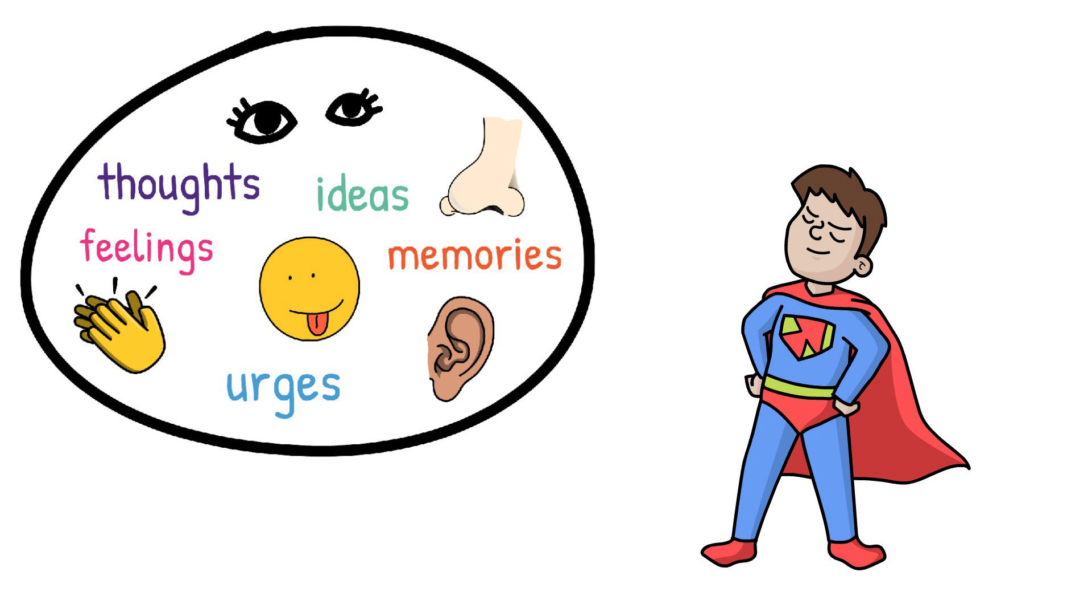But it doesn't have to be that way. We actually have the power to dim the torch so it's a little less bright and share the light across other parts of the brain. In fact, we can even choose to move the torch to something entirely different in our mind, like one of the five senses.